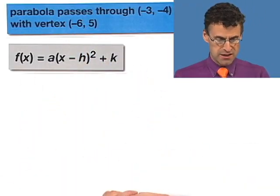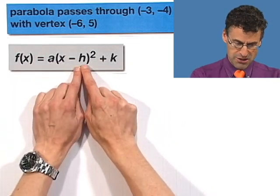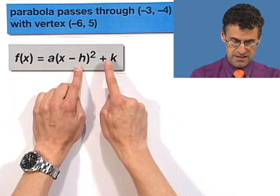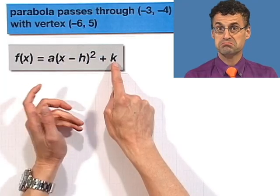So in fact, we immediately know, if we use this form, that the h is going to be negative 6 and the k is going to be 5. Perfect. Perfect.